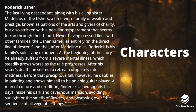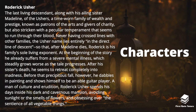The other important character is Roderick Usher — the last living descendant, along with his ailing sister Madeline, of the Ushers: a time-worn family of wealth and prestige known as patrons of the arts and givers of charity, but also stricken with a peculiar temperament that seems to run through the blood. Never having crossed lines with other families, the Usher name lies entirely in the direct line of descent. At the beginning of the story Roderick already suffers from severe mental illness which steadily grows worse, and after his sister's death he seems to retreat completely into madness. A man of culture and erudition, he spends his days inside his dark and cavernous mansion avoiding sunlight, the smells of flowers, and obsessing over the sentience of all vegetable things.